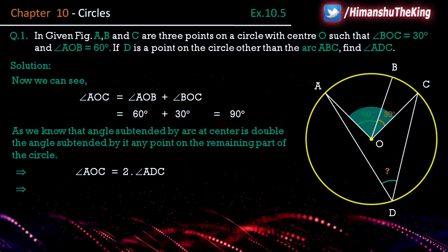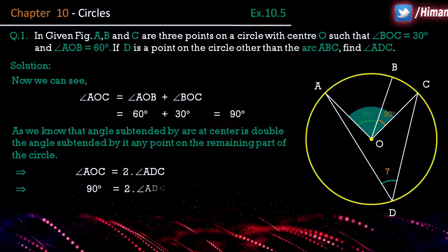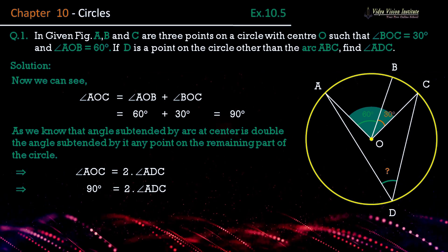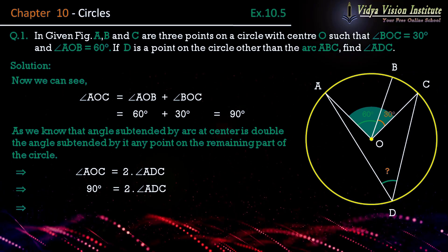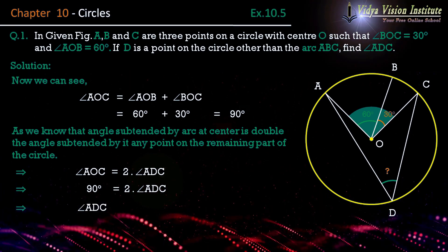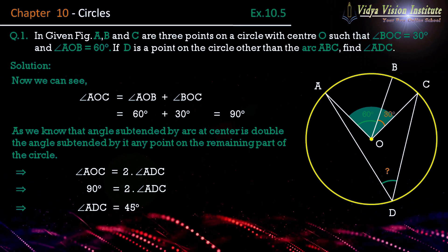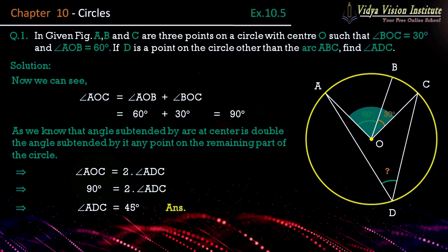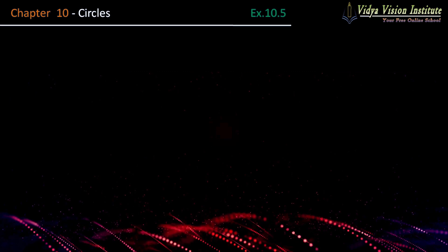Ab yahan pe angle AOC ki value rakhenge. Angle AOC is equal to 90 degrees, is equal to 2 into angle ADC. Aur isko further solve karenge to angle ADC ki value aa jayegi 45 degrees. Yehi humara answer ho jayega.